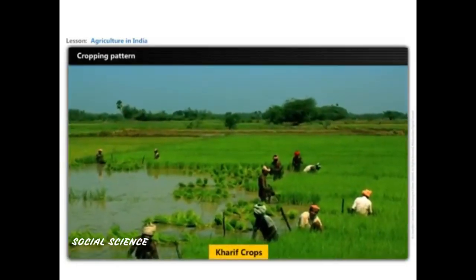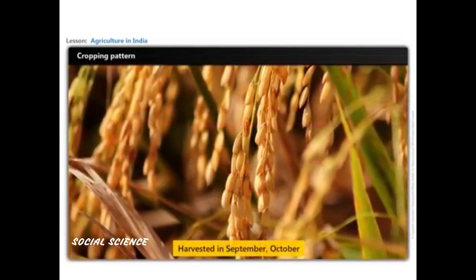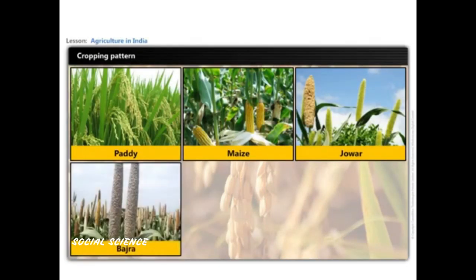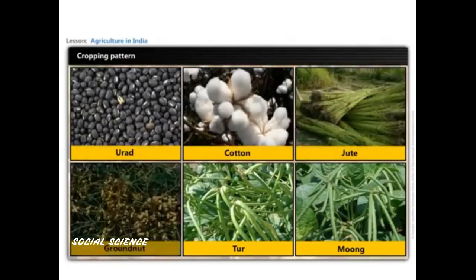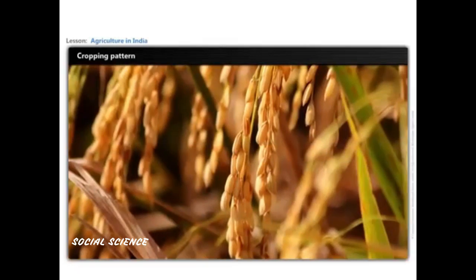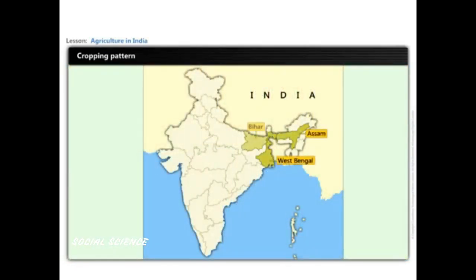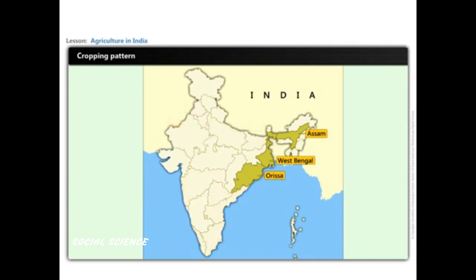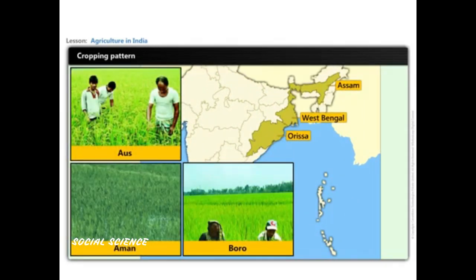Kharif crops are sown with the onset of monsoon and harvested in September-October. Important Kharif crops include paddy, maize, jowar, bajra, tur, moong, urad, cotton, jute, groundnut, and soya bean. Important rice-growing regions are West Bengal, Assam, Bihar, Uttar Pradesh, coastal regions of Orissa, Andhra Pradesh, Tamil Nadu, Kerala, and Maharashtra. States like Punjab and Haryana have also started growing rice recently.